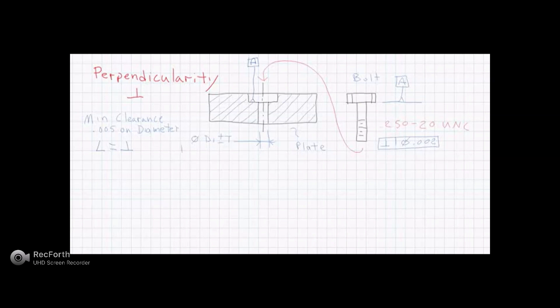So what I'm going to do is assign a feature control frame. I'm going to associate it with the size. That means it will be applied to the axes. And then I'm just going to use my angularity symbology, and we know it's the same as perpendicularity. My tolerance boundary is going to be diametric.